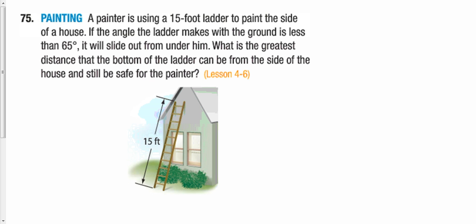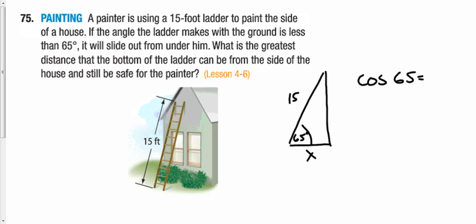This next problem is decent. Draw a picture: a ladder is 15 feet long and the angle with the ground is 65 degrees. The question asks how far away the ladder is from the house — that's the adjacent side. So cosine of 65° equals adjacent over hypotenuse, giving x = 15·cos(65°) ≈ 6.3 feet.